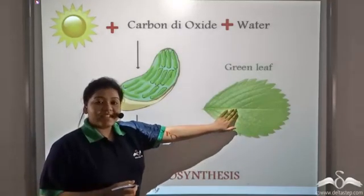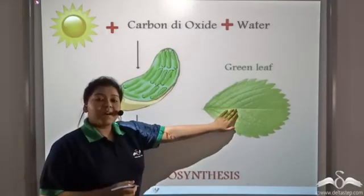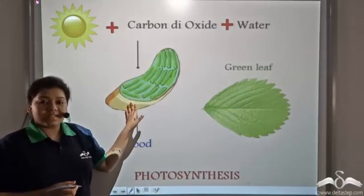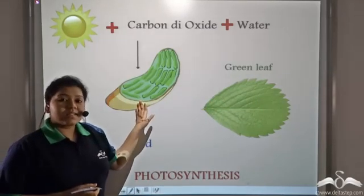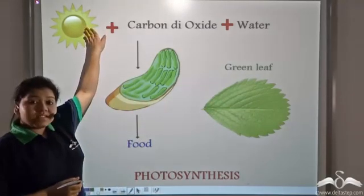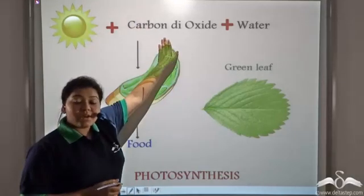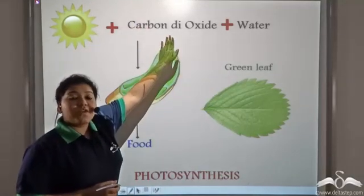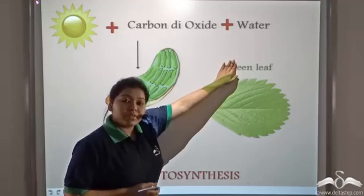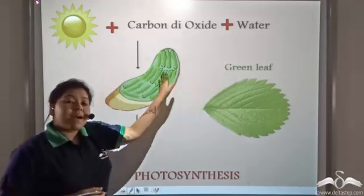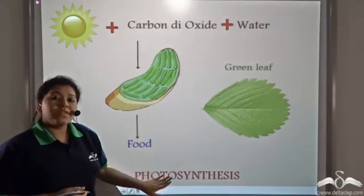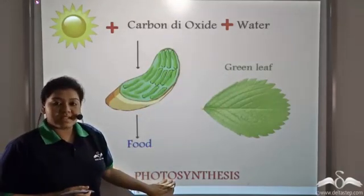Green leaves contain an abundance of chloroplasts. Chloroplasts absorb sunlight and together with carbon dioxide from the air and water from the roots, manufacture food by the process of photosynthesis.